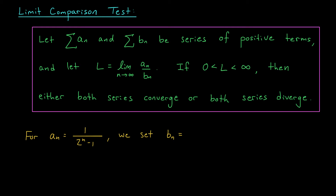Let's apply this new test to our example. We were trying to understand a sum of terms a_n, where a_n equals 1 over 2 to the n minus 1. We'd like to compare this with a sum of terms b_n that have the same sort of limiting behavior as the a_n's. We're going to pick the dominating term in the numerator and the dominating term in the denominator — so in this case, b_n equals 1 over 2 to the n. Note that the terms are positive, so the limit comparison test applies.